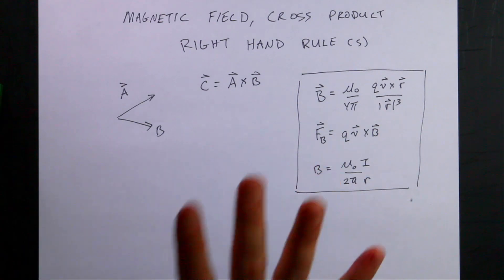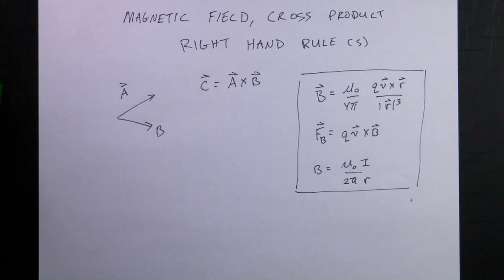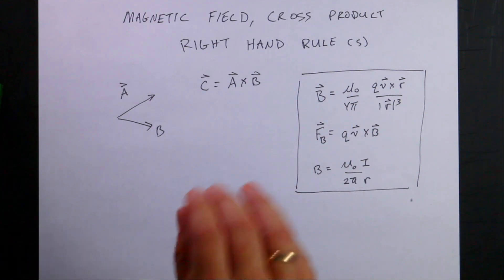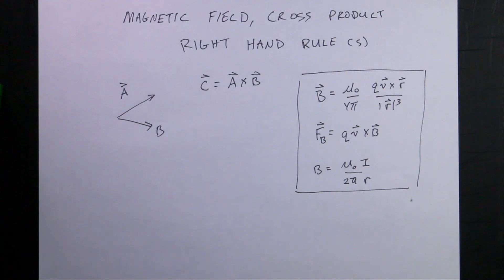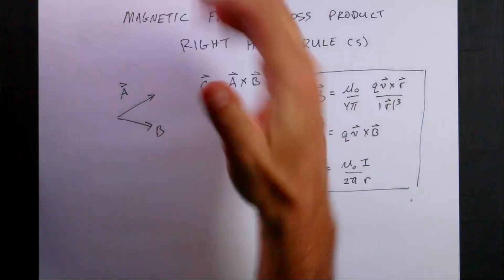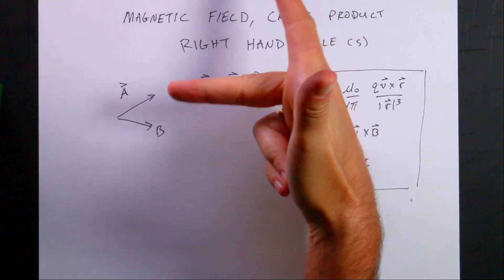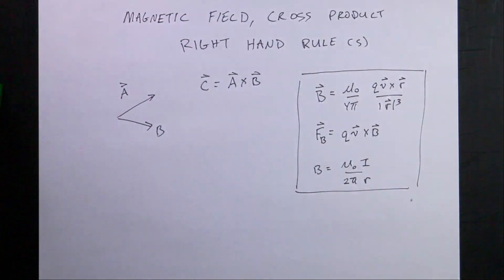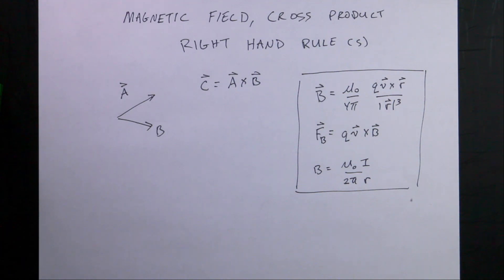I know it's confusing. Cross products and magnetic fields are a problem, but I'm going to try to explain to you how it works. I'm going to try to explain the right-hand rule because that's something you're going to need. I'm focusing this more on a conceptual level — I'm not going to do a lot of calculations.